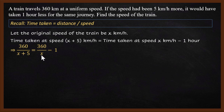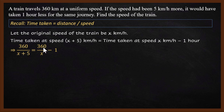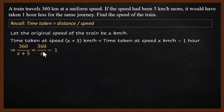If the speed was x, the original speed, you get 360 divided by x, minus 1 — that's the hour you save. If you go at the new speed, you save 1 hour. So the main equation is: 360/(x+5) = 360/x − 1. This is the most important part; if you write this wrong, you will get the wrong answer.